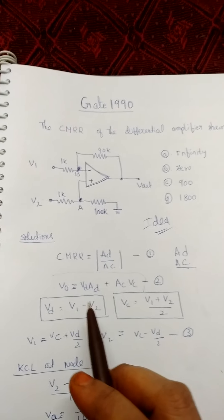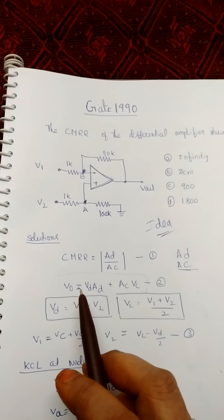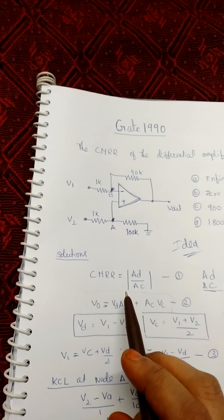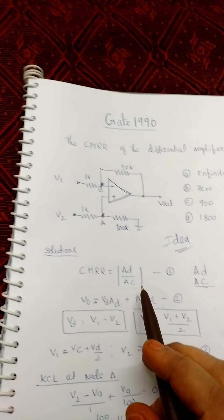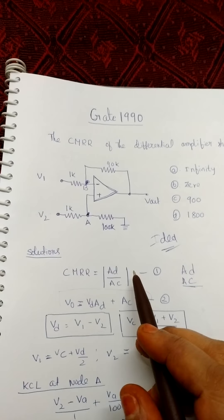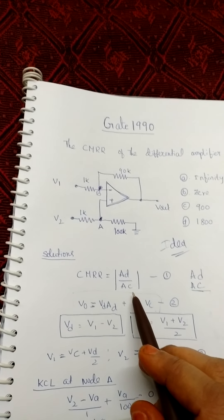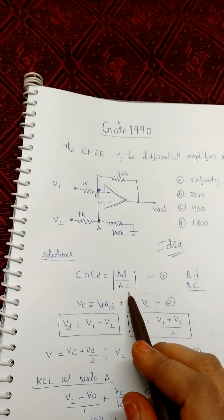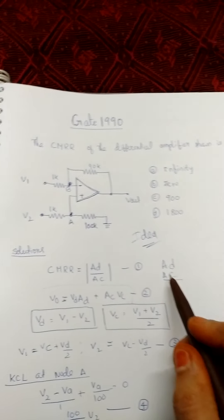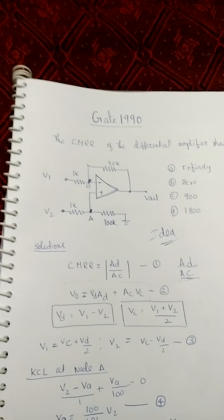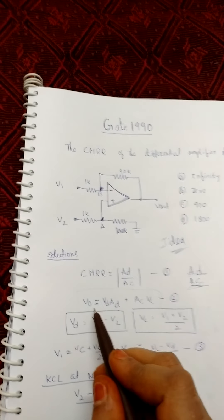Now let's look at the solution. The common mode rejection ratio has a formula: it is the ratio of differential gain AD to the common mode gain AC.